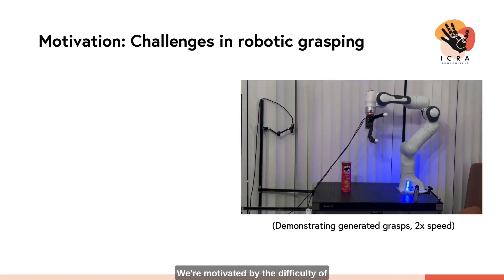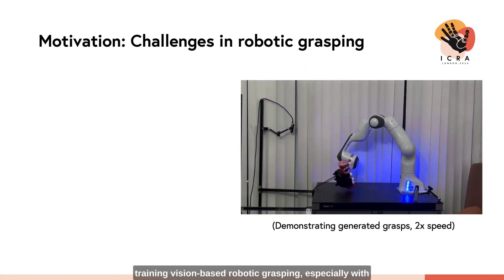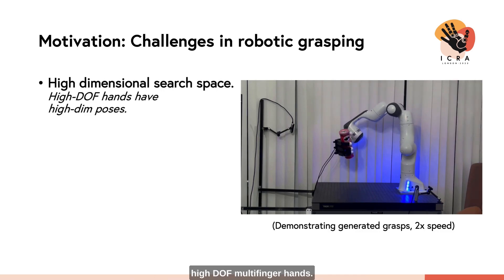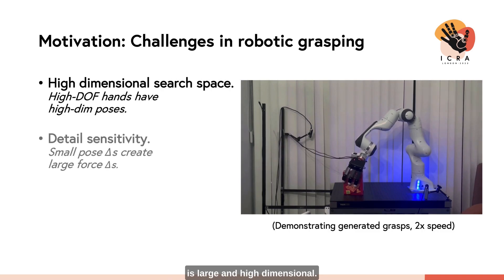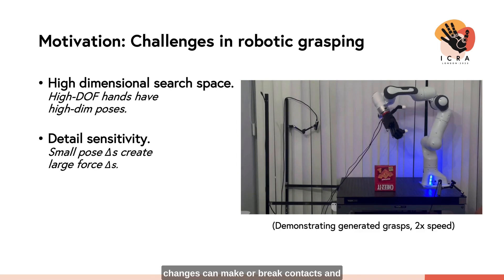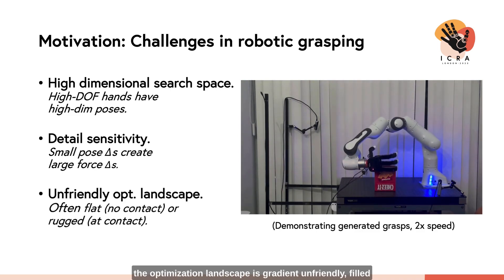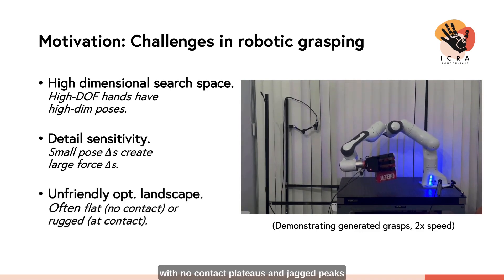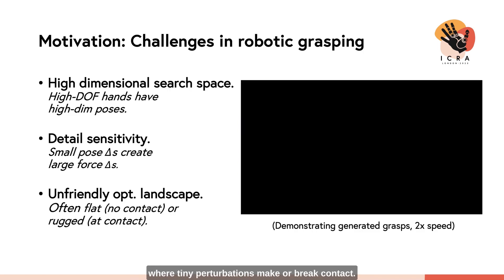We're motivated by the difficulty of training vision-based robotic grasping, especially with high-DOF multi-finger hands. The search space of poses is large and high-dimensional; high-frequency details matter since small pose changes can make or break contacts. The optimization landscape is gradient-unfriendly, filled with no-contact plateaus and jagged peaks where tiny perturbations make or break contact.